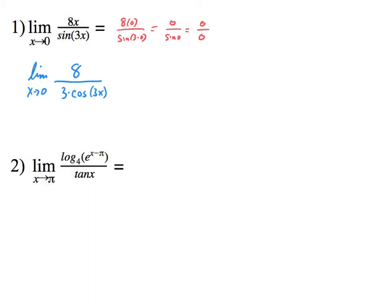Top and bottom — take the derivative of the top, take the derivative of the bottom. This is not quotient rule; this is just top derivative, bottom derivative. Now we simply plug in the numbers, so we plug in 0. The top would be 8, and the bottom would be 3 times cosine of 3 times 0. That becomes 8 over 3 times cosine 0. And cosine 0 is 1, so that's 8 over 3. And there's your answer — that is the limit as x approaches 0 of this function. It's 8 over 3.